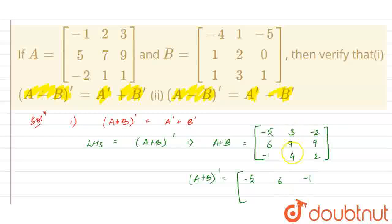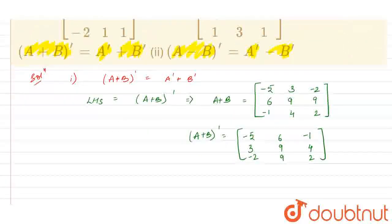The second column will be second row. Here's 3, 9, 4 and the third column will be our third row, minus 2, 9 and 2. Alright, so this is our transpose, as simple as that.